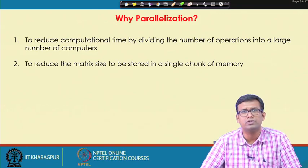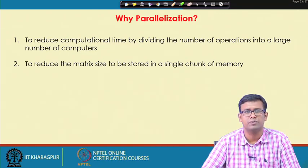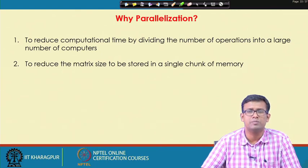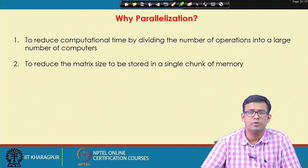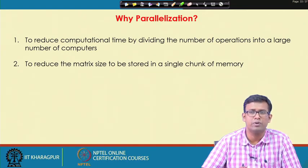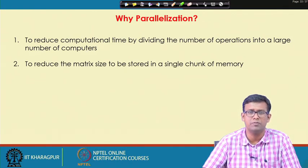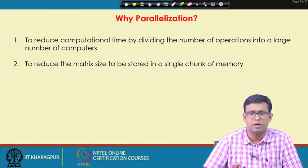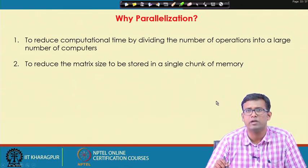Why parallelization? We discussed it earlier: to reduce computational time by dividing the number of operations across a large number of computers. Each computer takes care of one subdomain, so a large number of computers can be associated with the entire matrix problem. The speed increases because the number of iterations remains the same, but each computer solves a smaller problem — each computer performs row calculations local to it in much smaller time. We can also reduce the matrix size stored in a single chunk of memory by breaking it into smaller matrices.